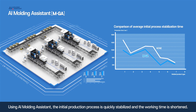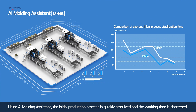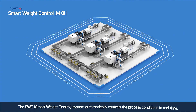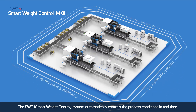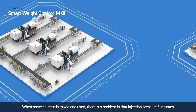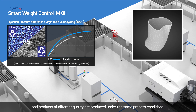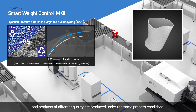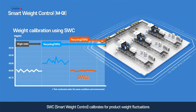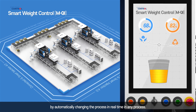Using the AI Molding Assistant, the initial production process is quickly stabilized and the working time is shortened. The SWC system automatically controls the process conditions in real time. When recycled resin is mixed and used, there is a problem in that injection pressure fluctuates and products of different quality are produced under the same process conditions. SWC calibrates to product weight fluctuations by automatically changing the process in real time in any process.